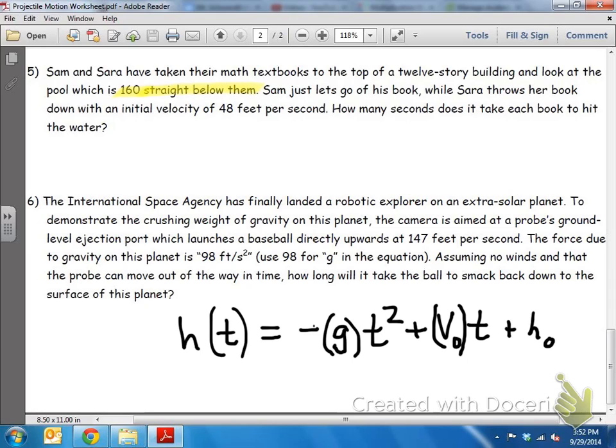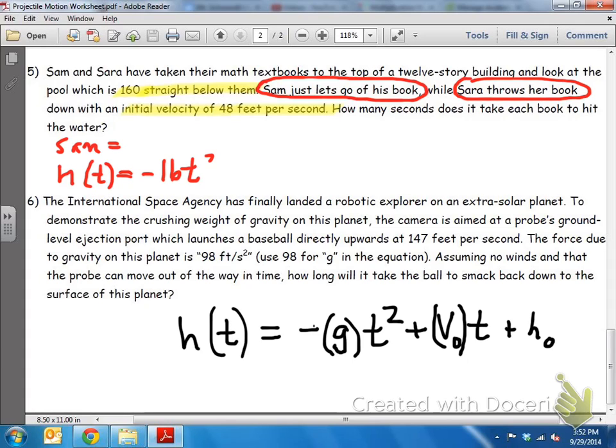Sam just lets go of his book, and Sarah throws her book. So it's interesting that we have Sam just let go of his book, and that means his initial velocity is going to be zero. Because he's just letting go, meaning he's not having an extra force. However, Sarah throws her book, meaning she's going to have an initial velocity of 48 feet per second. So Sam's equation is going to look different from Sarah's, because Sam doesn't have an initial velocity, but Sarah does.